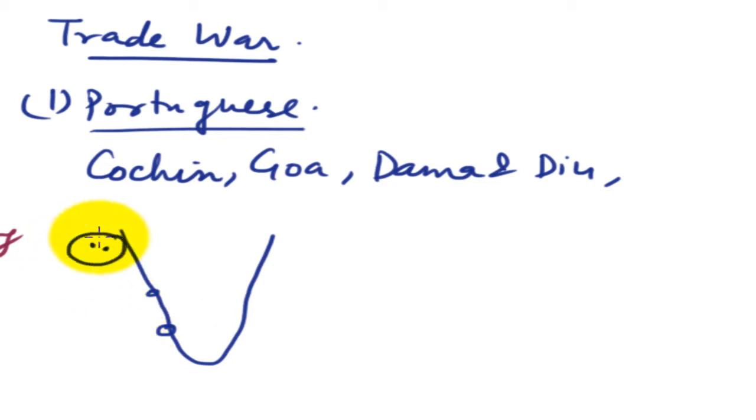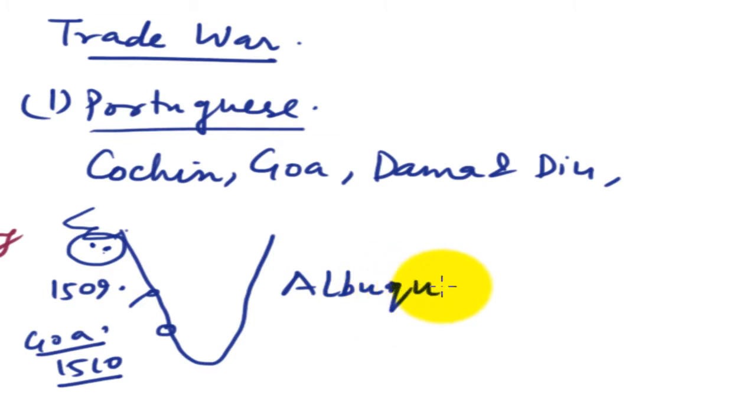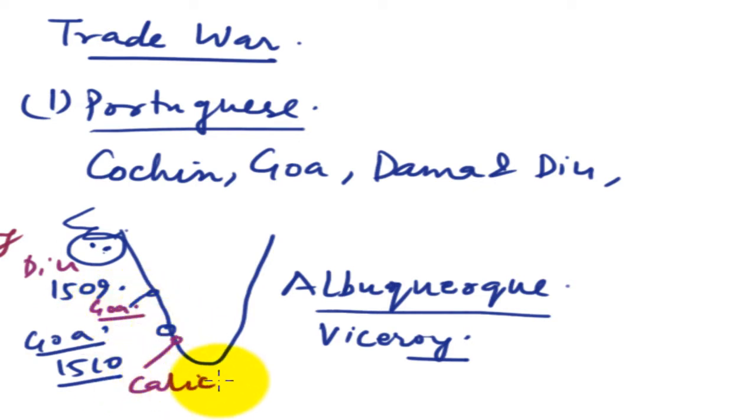The Portuguese conquered Diu, this place near Gujarat, in 1509. And Goa, this one is Goa, in 1510. At that time, Albuquerque was the viceroy of Portugal. And shortly afterwards, he captured Calicut also. Kochi and Calicut. Firstly Diu, then Goa, then Calicut. And this way, Portuguese made their presence in India.